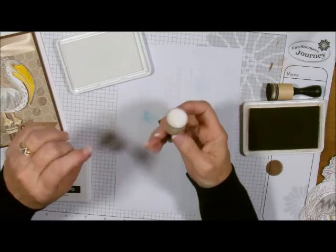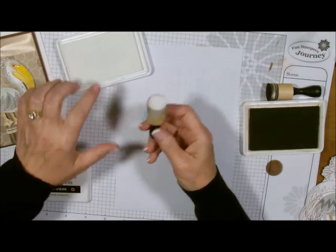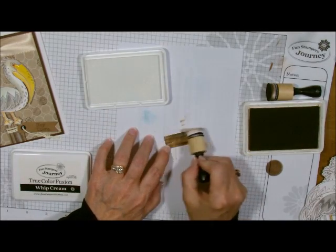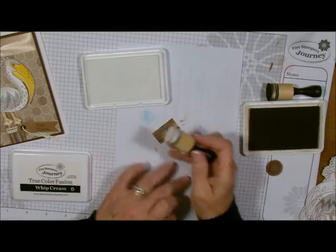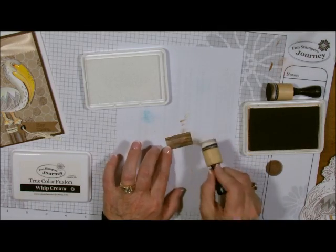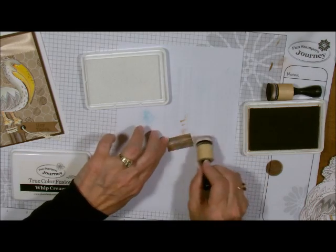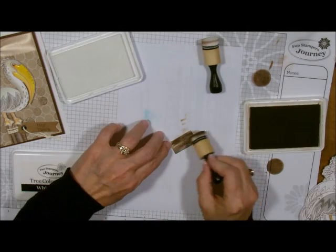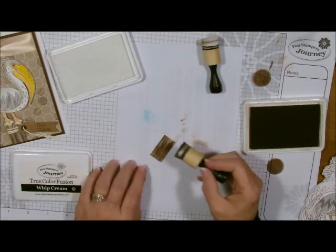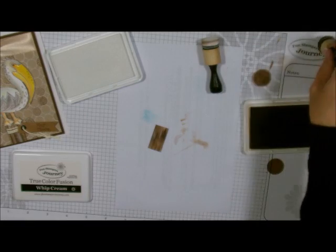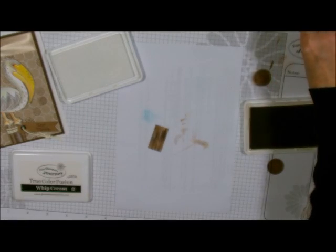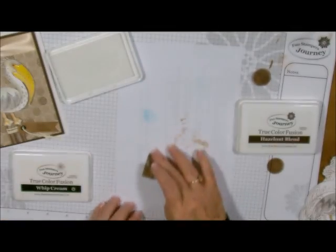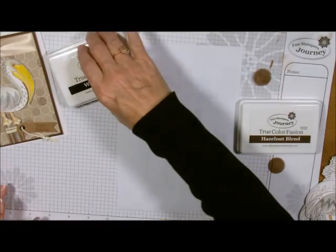Now I'm going to take my white dauber and you'll notice that it does have some brown around it. It doesn't matter. It doesn't come off on the ink pad so don't let that worry you. Now what I'm going to do is do the same thing with this one. I'm going to lightly put some streaks into it just like this. Now I'm going to go back one more time with the hazelnut and add a few more to make it look more like a piece of weathered wood. There's our little wood piece. We're going to let that set and dry.